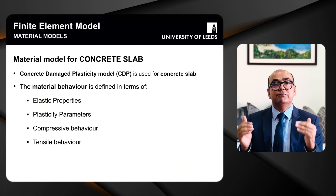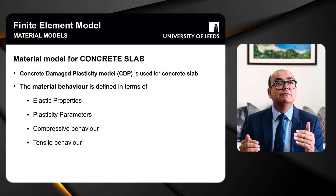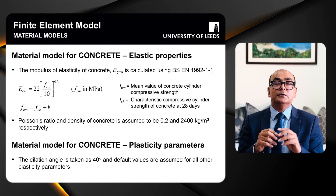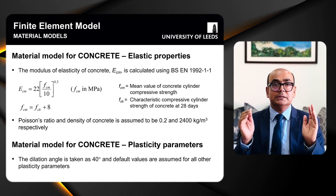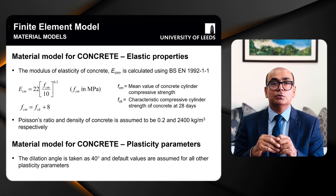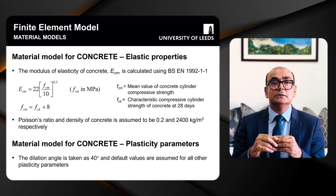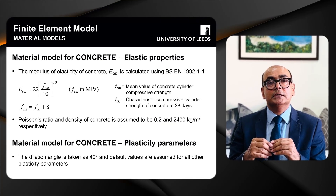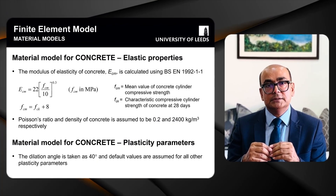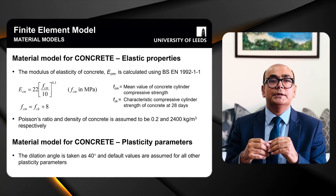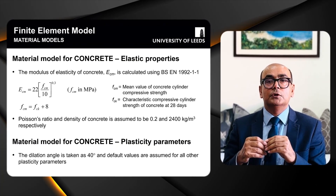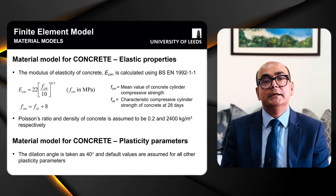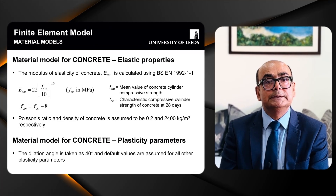For the CDP model we define elastic properties, plastic properties, compressive behavior, and tensile behavior. The elastic properties are defined using Eurocode 2 equations, where fcm is the mean concrete compressive cylinder strength. Poisson's ratio was assumed to be 0.2, density 2400 kg/m³, and the dilation angle for all models was taken as 40 degrees.